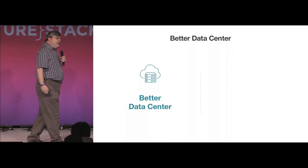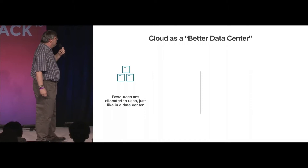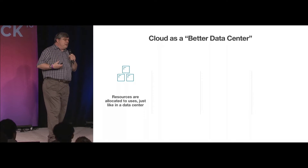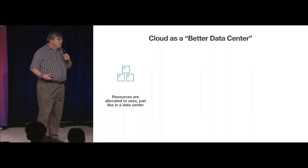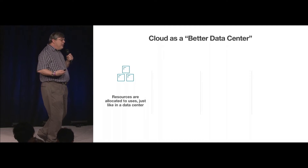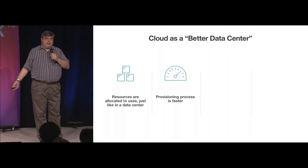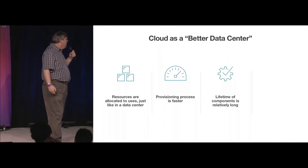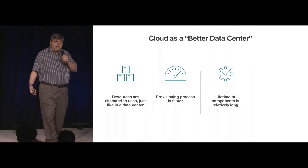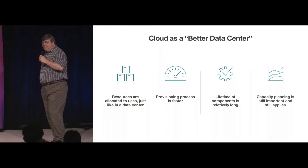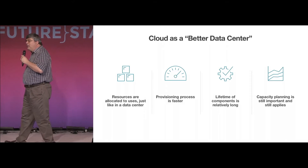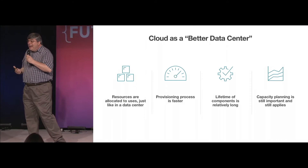When we talk about a better data center, what we're talking about is using the cloud where resources are allocated to specific uses. Much like you would allocate a server in your own data center for a particular purpose, you allocate a server in the cloud for a particular purpose. The provisioning process is a lot faster in the cloud, but you typically allocate resources and leave them allocated for a long period of time, just like in your own data center. As such, capacity planning is still an important aspect of your work.